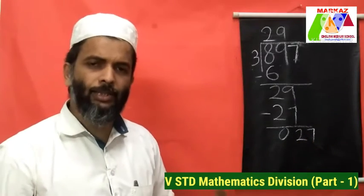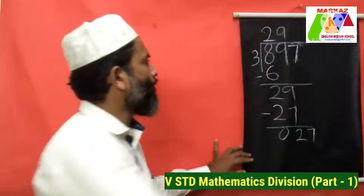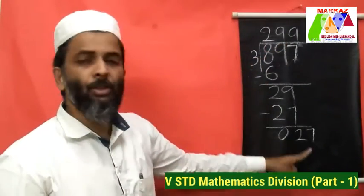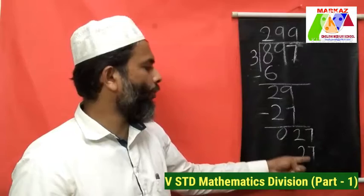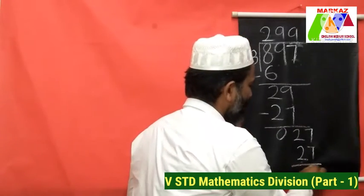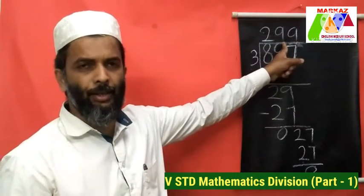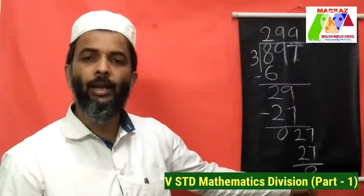Repeat the whole process again. How many 3s are in 27? 9. Write 9 as a quotient. 9 then multiply — 9 into 3 is 27. Then subtract: 27 minus 27 is equal to 0. The answer is 299. We call the answer the quotient. 897 is the dividend, 3 is the divisor, and 0 is called the remainder. These are the basic ideas of division.